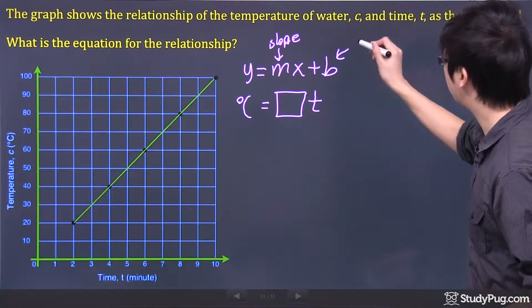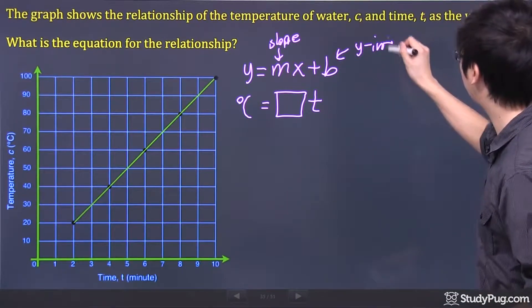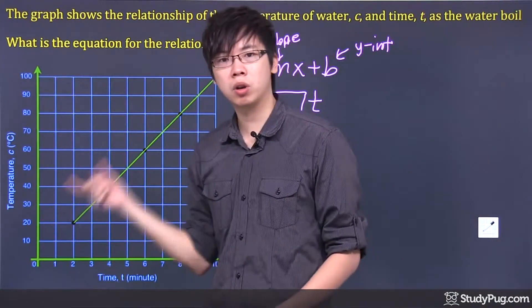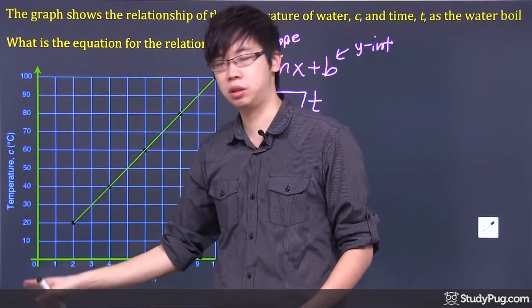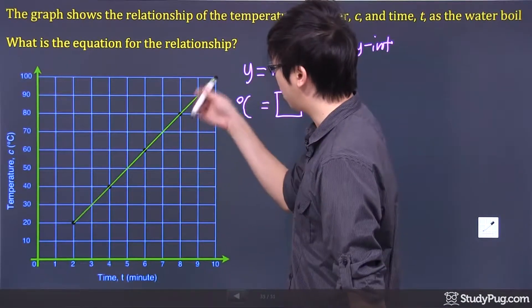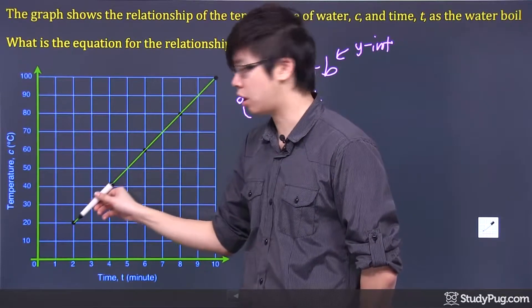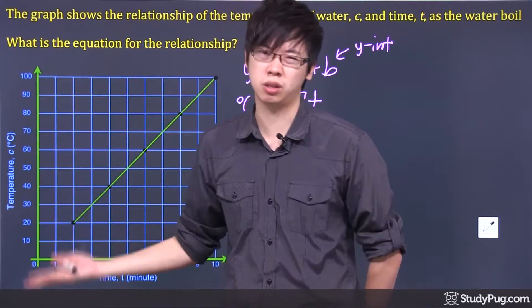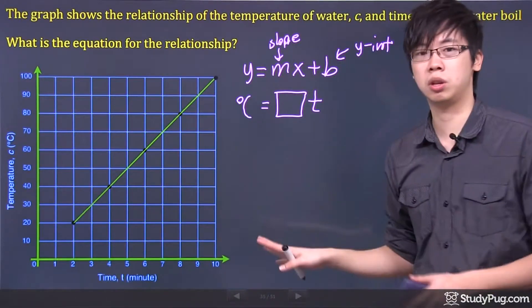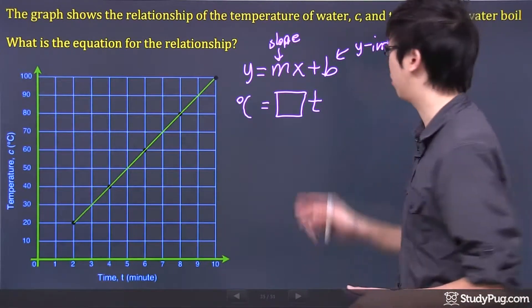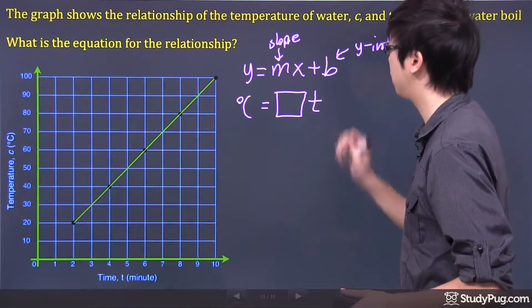Now the b is known as the y-intercept on the graph. The y-intercept is where the graph would touch the y-axis. If I just look at the graph right here, if it keeps going straight down like this, it will probably enter the zero, go across the zero. So in this question here, you don't have a b for your equation. Just leave it out.